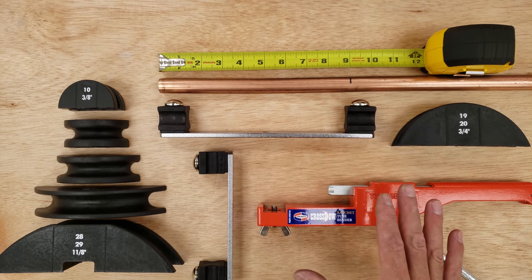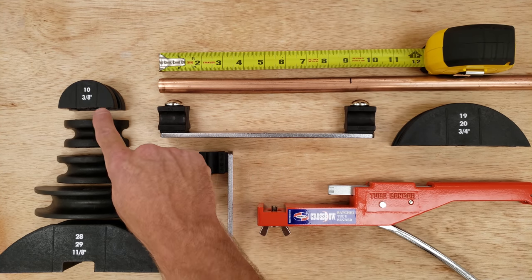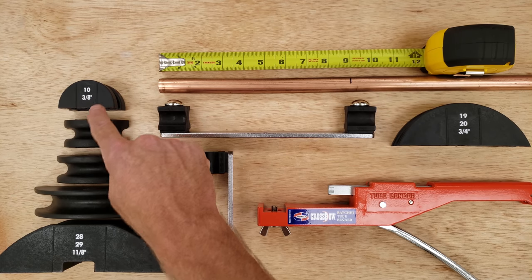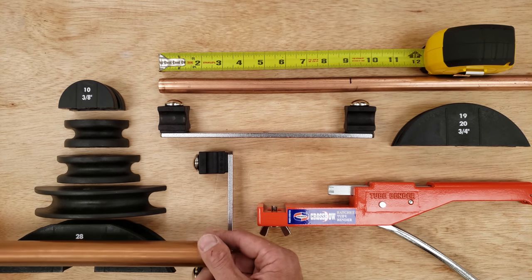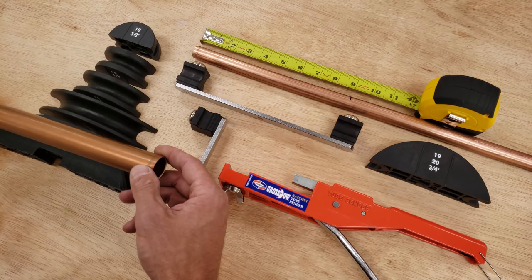Here we have our ratcheting tubing bender, and this is capable of bending as small of a tube as three-eighths or up to inch and an eighth. Inch and an eighth OD soft copper tube, that's pretty large.